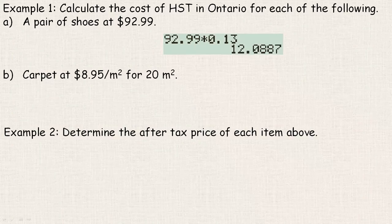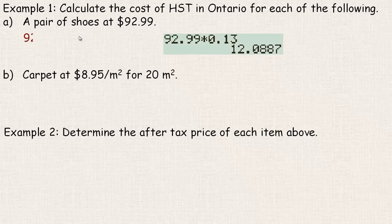In this example on the next page, it says to calculate the cost of HST in Ontario for each of the following. A pair of shoes is bought at $92.99. For Ontario, it's a 13% harmonized tax rate.